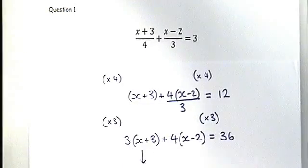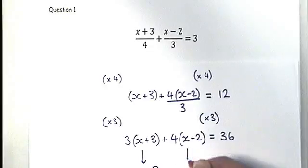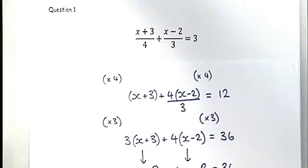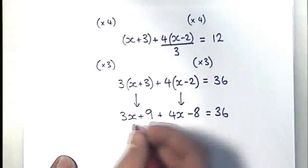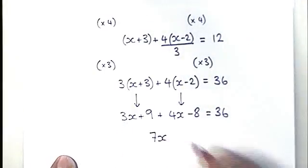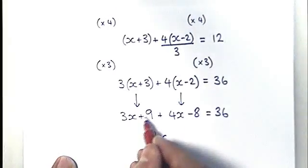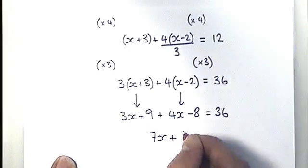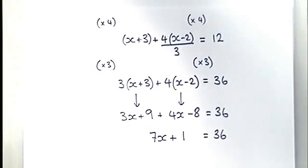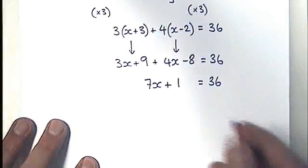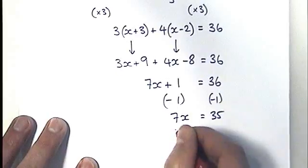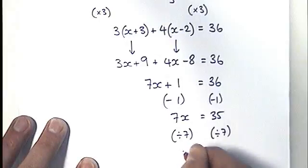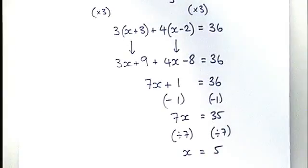Now multiply out the brackets: three lots of x and three lots of three from the first bracket, and four lots of x and four lots of minus two from the second. We get a much simpler equation. The 3x and 4x combine to give 7x; the numbers give plus nine and minus eight, which is plus one. Taking away one from both sides gives 7x = 35, and dividing by 7 gives x = 5.